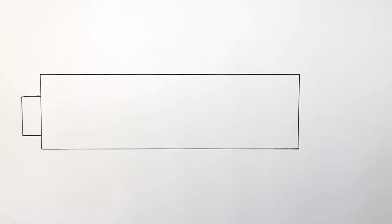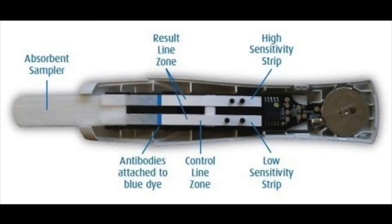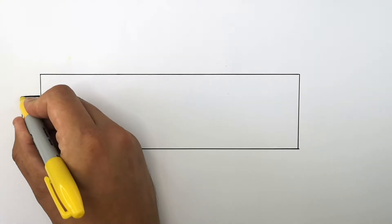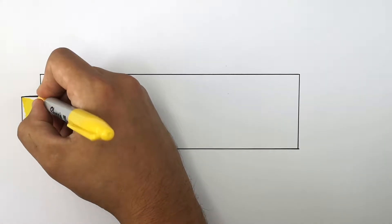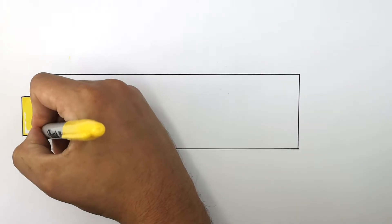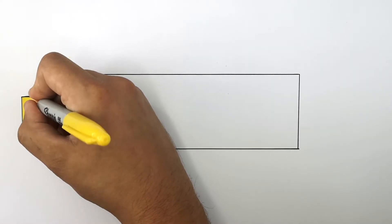What we're going to look at now is how monoclonal antibodies are used in pregnancy tests. Imagine we've taken all the casing off the pregnancy test — this is what the technology looks like inside. The woman is going to urinate on the part of the pregnancy test where you're supposed to urinate on it.